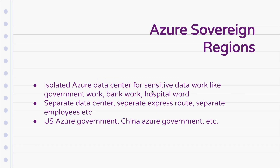To resolve this particular problem, Azure has something known as sovereign regions. These are isolated regions specifically for sensitive data. The whole concept is to have sensitive data separated from normal data and have a high level of security, encryption and access restriction on them. They have separate data centers, separate express routes — meaning the fiber optics connecting them are also separate — and they also have separate employees, which increases the level of security and trust Azure gains from clients who need these specific kinds of regions.